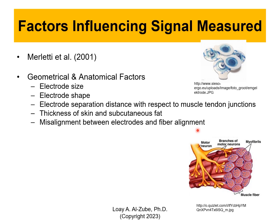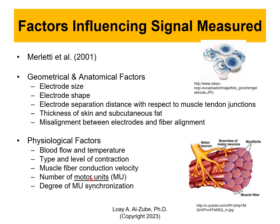We can't rely on any data we're given; we need to make sure it is actually good data to work with. Then we have physiological factors: blood flow and temperature of the subject, type and level of contraction, muscle fiber conduction velocity, how fast action potentials are moving, number of motor units, degree of motor unit synchronization, and even the general health of the subject. To be consistent with big data, we need to make sure we are accounting for all of these factors.